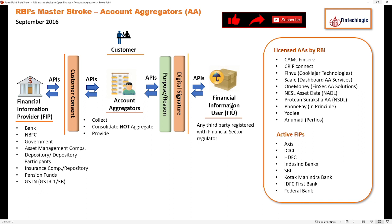Consider that this kind of account aggregator arrangement was not there. In that case, a financial information user would have to create API bridges directly with each financial information provider to get details in real time. There might be hundreds of thousands of FIUs, and creating API links between all of them from scratch would be a tedious task. So what RBI did is introduce account aggregators in between, who act as a bridge between your FIPs and FIUs.